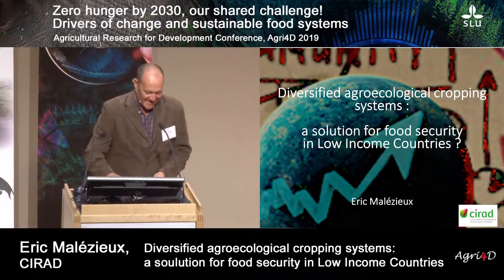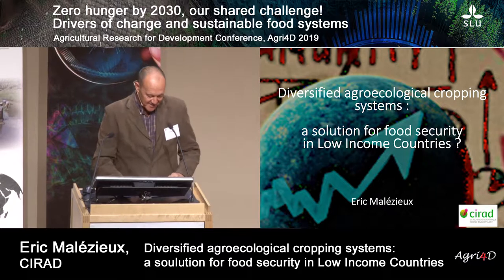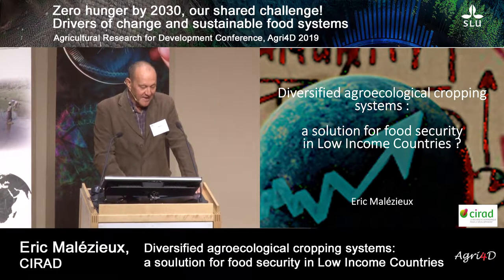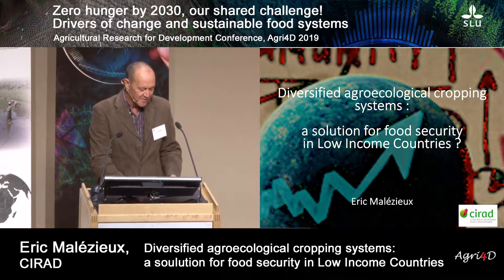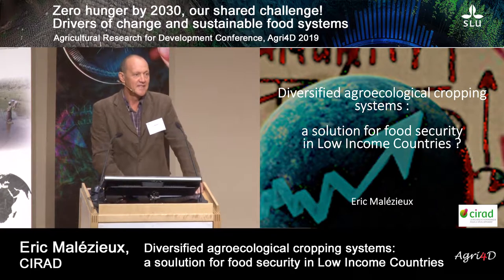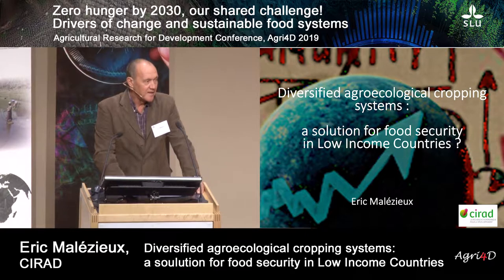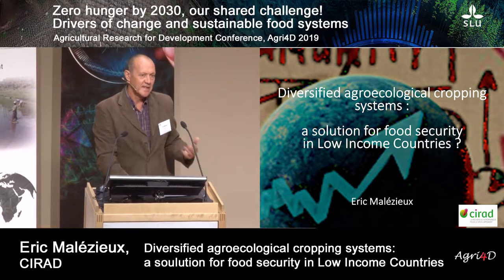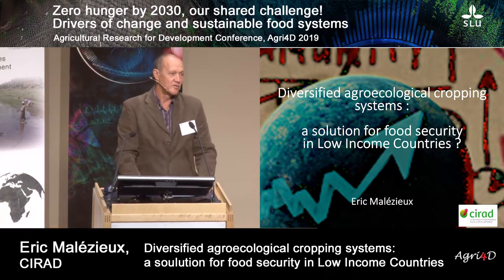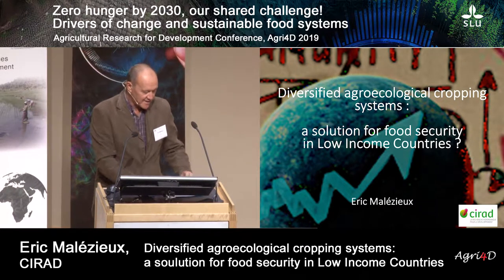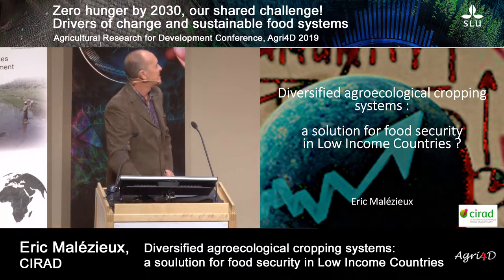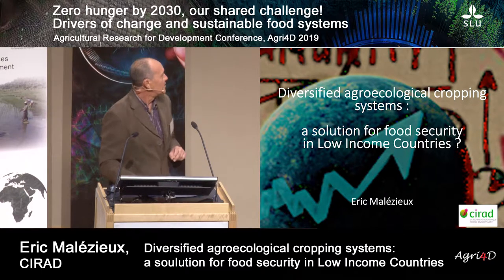Good morning ladies and gentlemen. It's a great pleasure and honor for me to be here in Uppsala with you this morning, and I would like to thank the organizers for inviting me for this talk. This conference is about food security and zero hunger for 2030, and there is indeed a lot of debate and controversy at the global scale and local scale on the best pathways to achieve this objective. Today we discuss how diversified agroecological cropping systems may be a solution for food security in low-income countries.